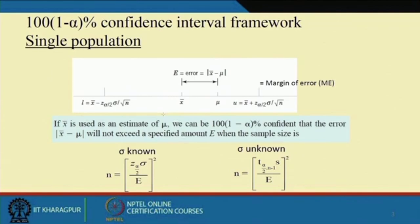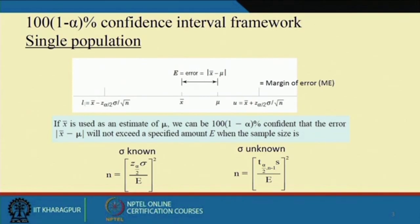Consider this figure. Here, consider a normal single population with mean mu and standard deviation sigma. Suppose you have conducted one sample — you have collected one sample of size n. Now, you are interested to know the confidence interval of mu from this sample. So, x-bar is the estimate of mu, and you have found out the 100*(1 - alpha) percent confidence interval, which will be from L to U. We have seen earlier: L = x-bar - z(alpha/2) * sigma/sqrt(n), and U = x-bar + z(alpha/2) * sigma/sqrt(n).